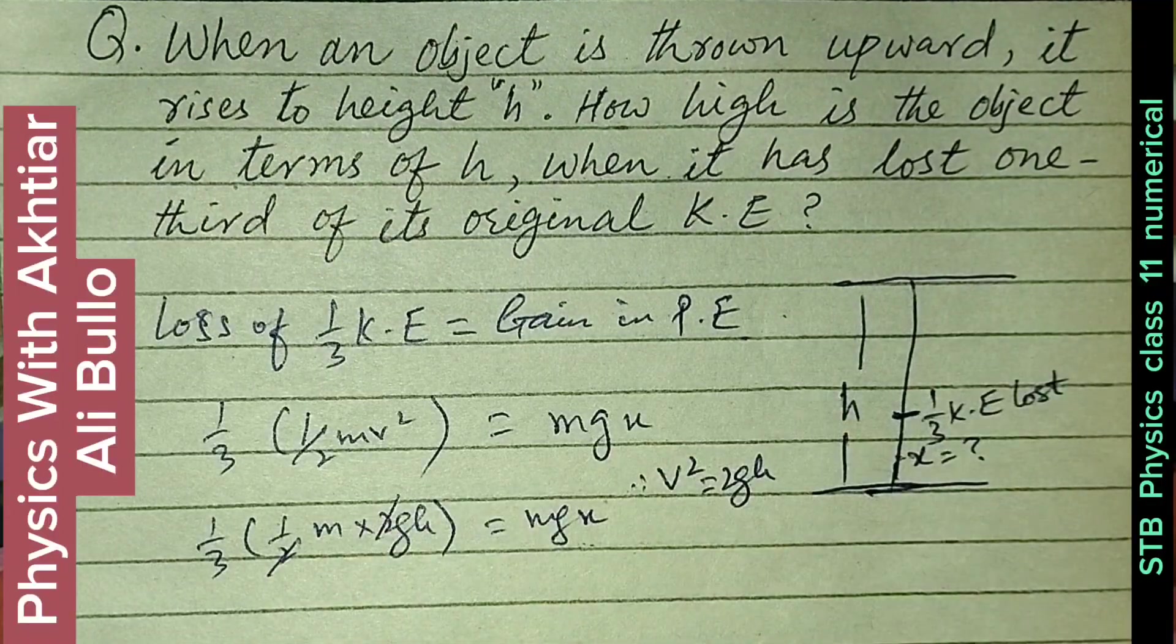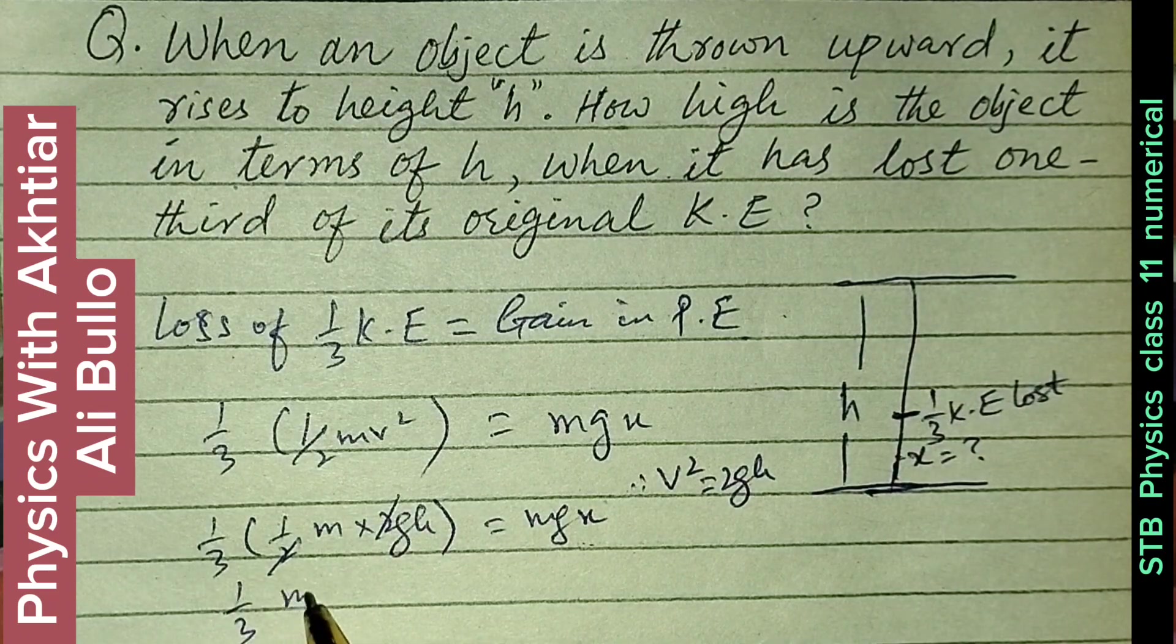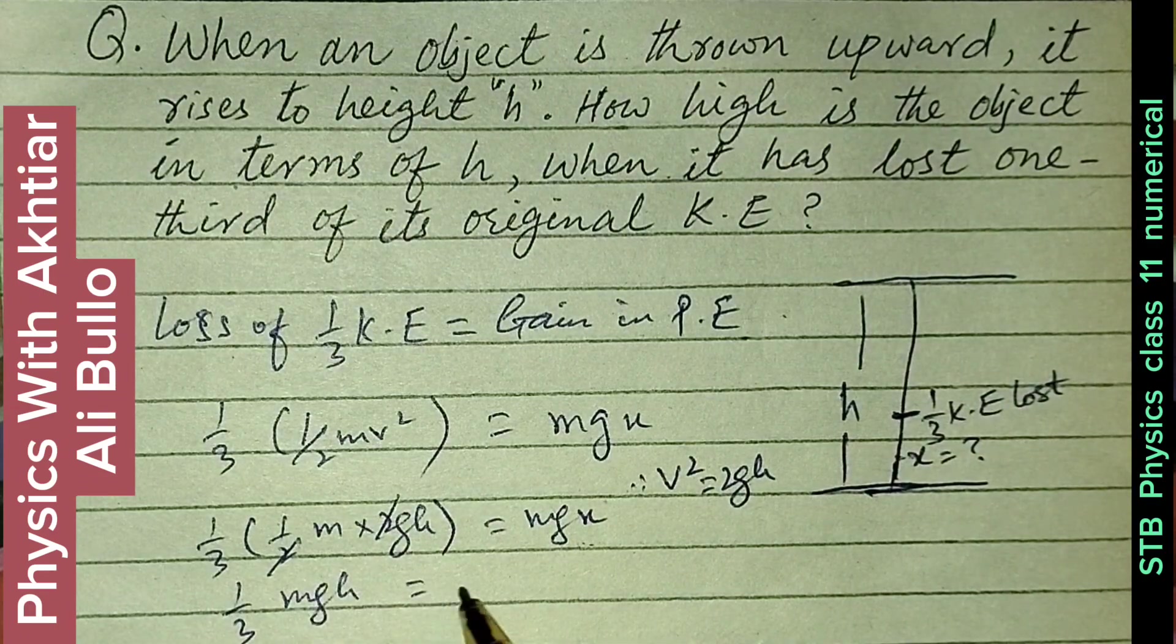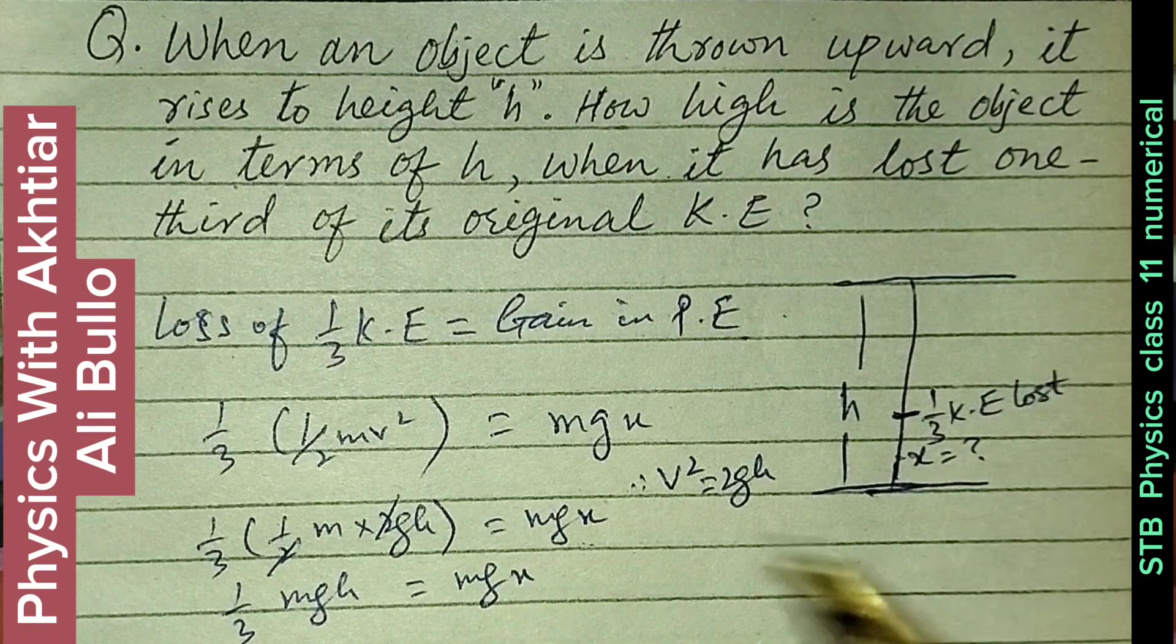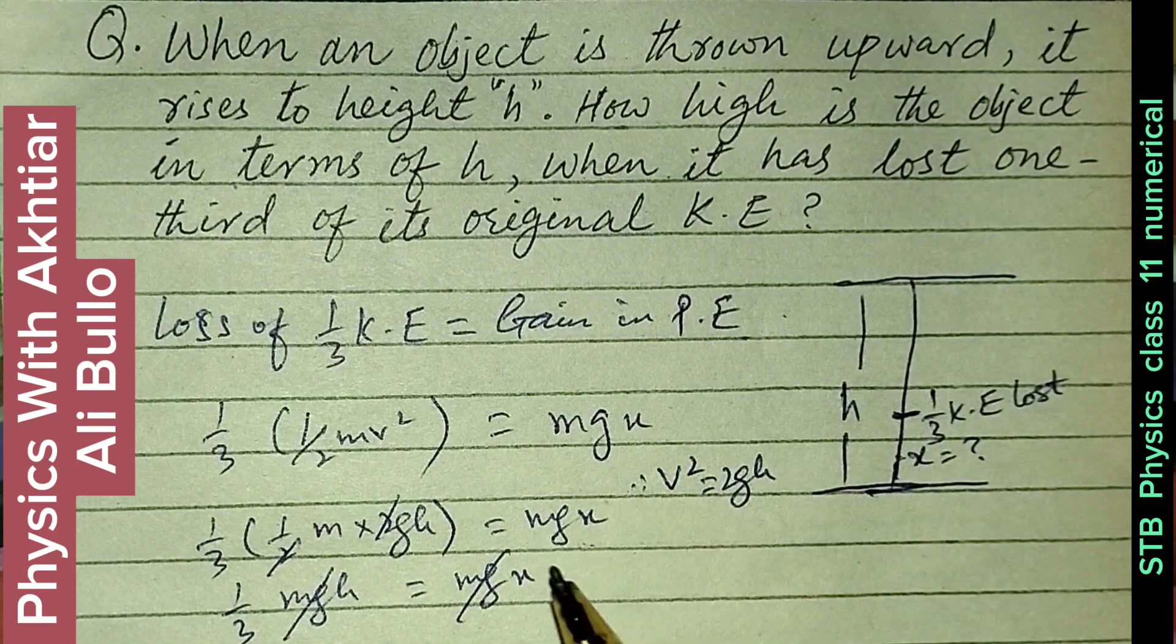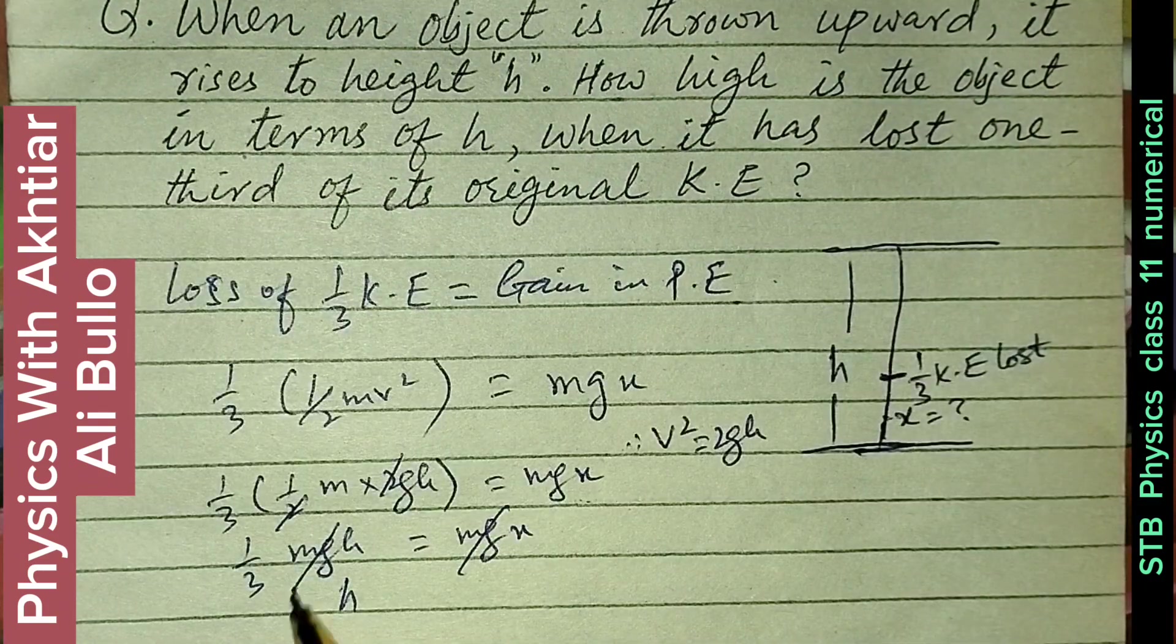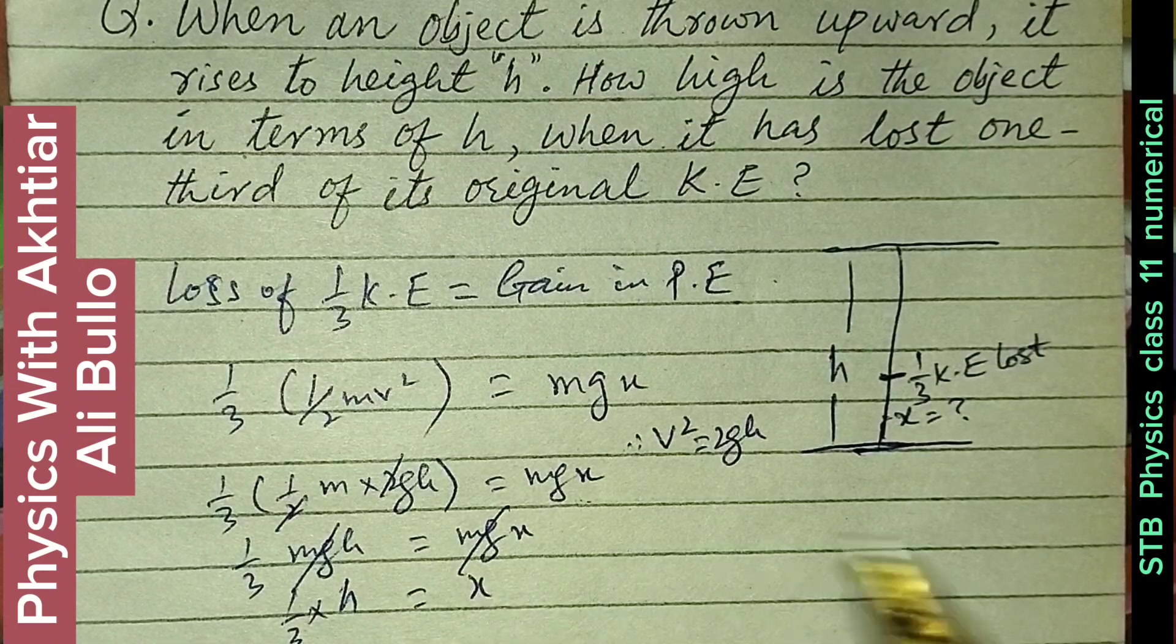2 will be cancelled with mg, so we have to find x: 1/3 into h is equal to x.